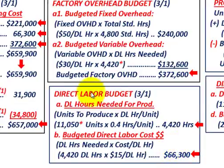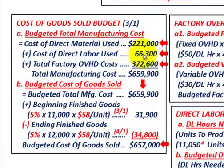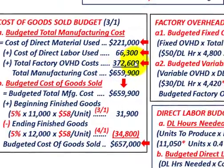That gives us a direct labor cost of $66,300, which comes off our direct labor budget. Going back to our cost of goods sold budget, our cost of labor used is $66,300.